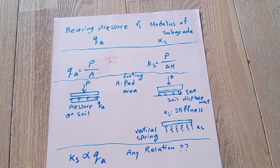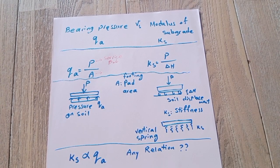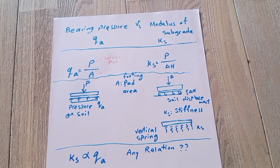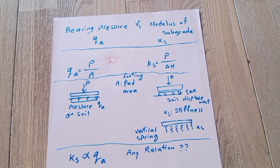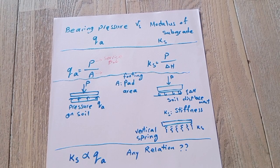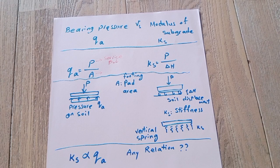Hello everyone, today I'm going to talk about two main parameters in foundation design and slab on ground: bearing pressure or qa, and modulus of subgrade or subgrade modulus or ks.